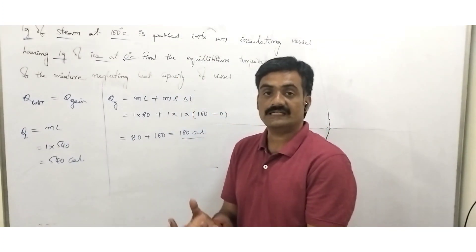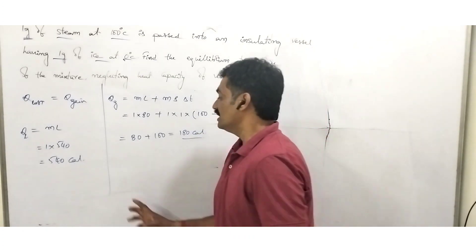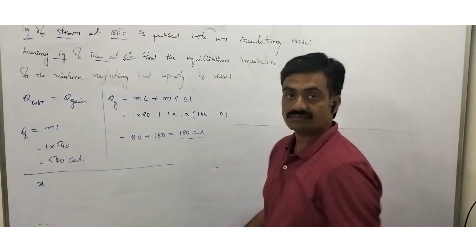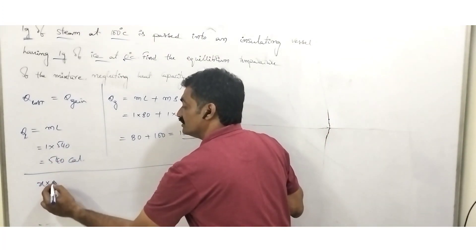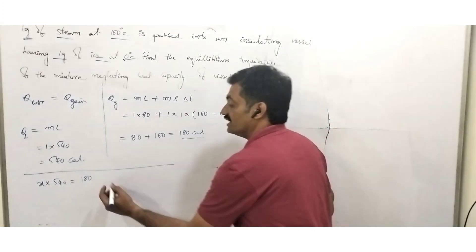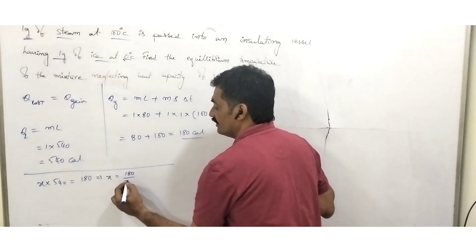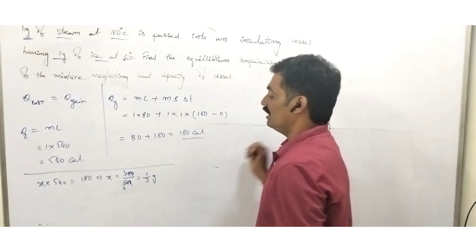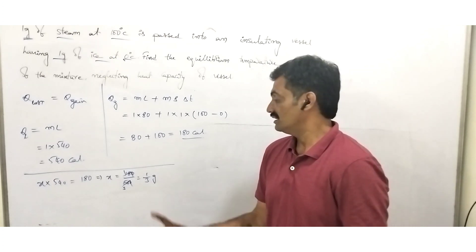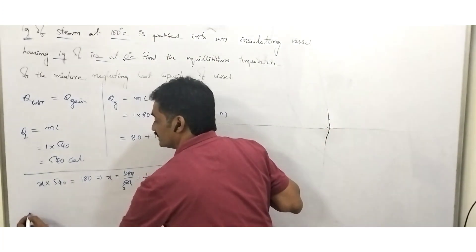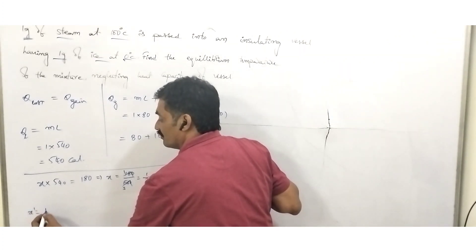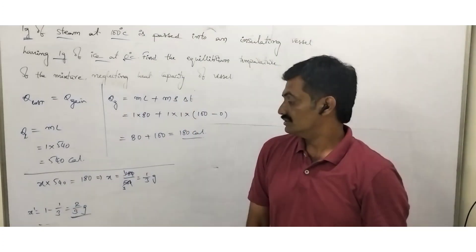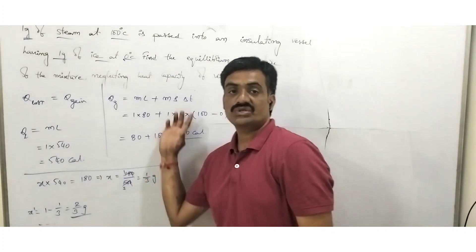Observe that as the steam loses heat, some of the steam will convert into water. Let's find out how much mass of steam has been converted into water. Let x grams of steam be converted into water. So x × 540 = 180, therefore x = 180/540 = 1/3 grams of steam has been converted into water. Remaining steam is 1 gram minus 1/3, so remaining steam is 2/3 grams present within this mixture.